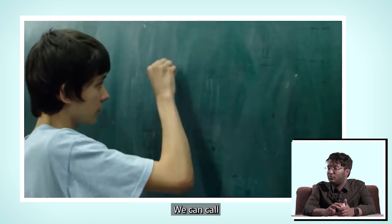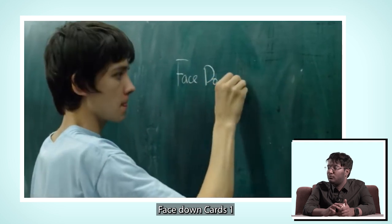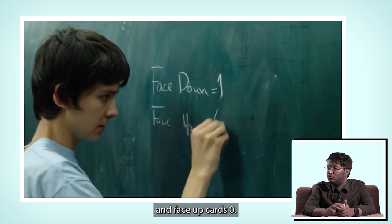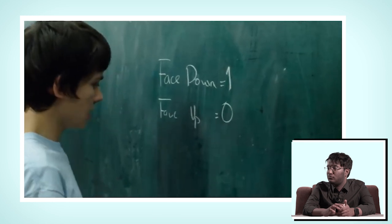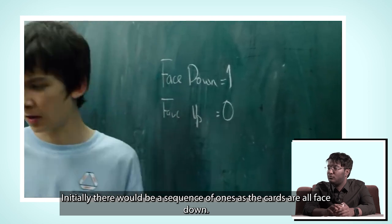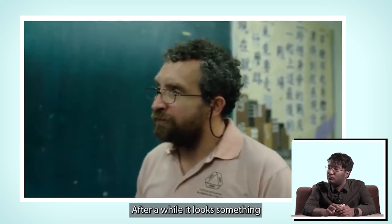We can call face down cards one, face up cards zero. And initially there would be a sequence of ones because the cards are all face down, but after a while it would look something like that.